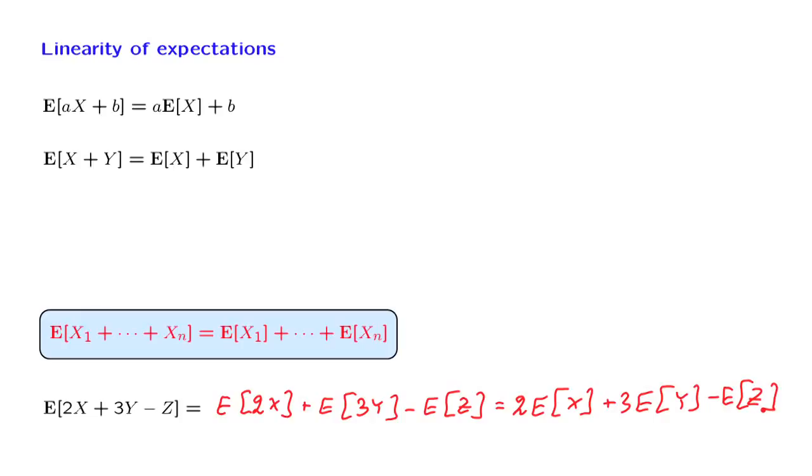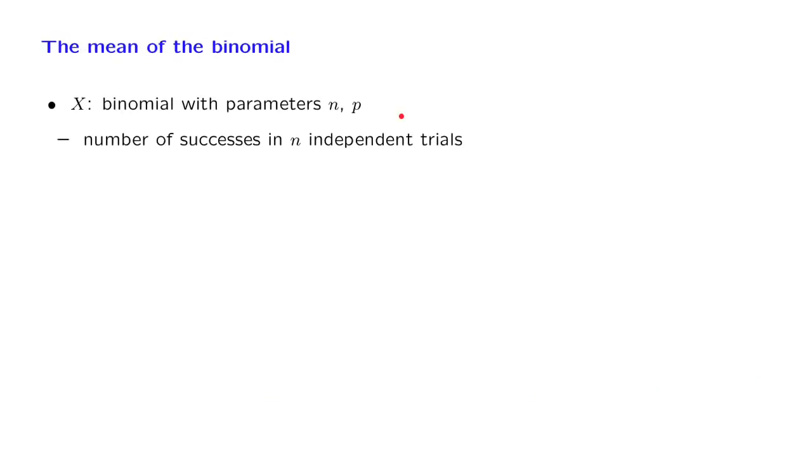What we will do next is to use the linearity property of expectations to solve a problem that would otherwise be quite difficult. We will use the linearity property to find the mean of a binomial random variable. Let X be a binomial random variable with parameters n and p. And we can interpret X as the number of successes in n independent trials, where each one of the trials has a probability p of resulting in a success.